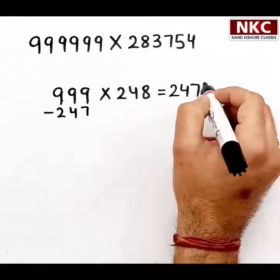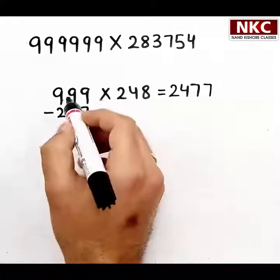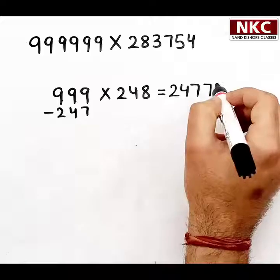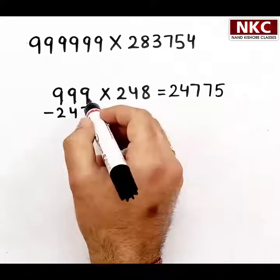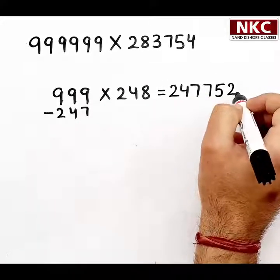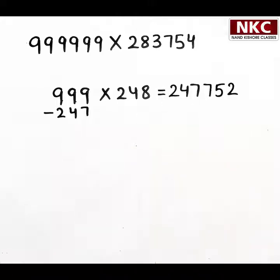9 minus 2 is 7. 9 minus 4 is 5. 9 minus 7 is 2. You can check on a calculator. This is the correct multiplication. See how easy it is.